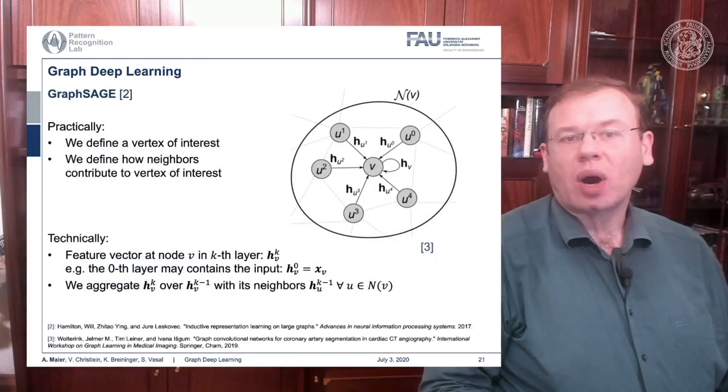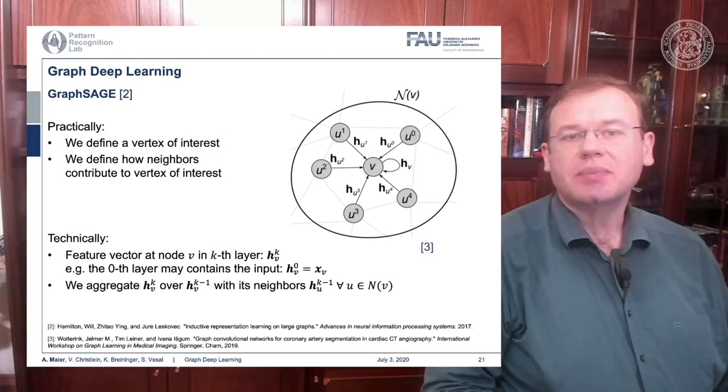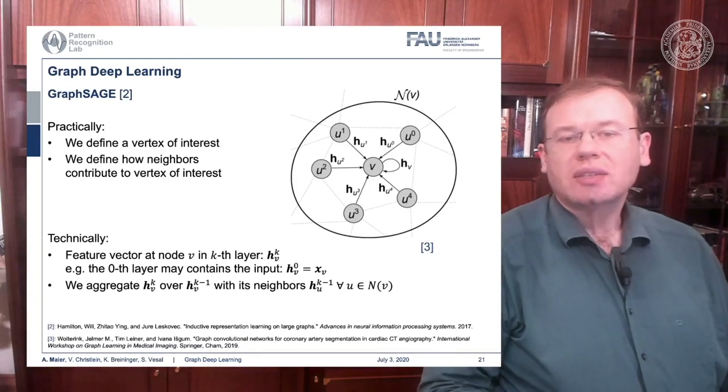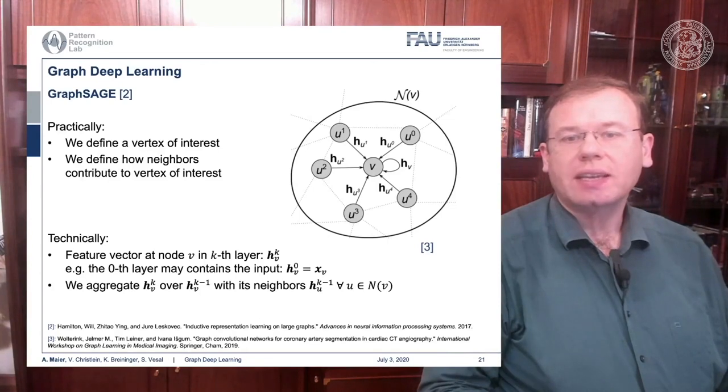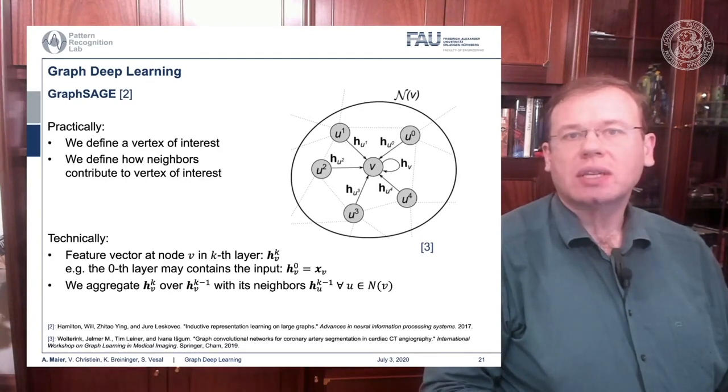One approach shown in reference two is GraphSAGE. Here we essentially define a vertex of interest and how neighbors contribute to the vertex of interest. Technically, we implement this using a feature vector at node v and the k-th layer, described as h_k^v. For the zeroth layer, this contains the input, the original configuration of your graph. Then we need to aggregate to compute the next layer using a special aggregation function over the previous layer. You use all of the neighbors, and typically you define this neighborhood such that every node connected to the node under consideration is included.